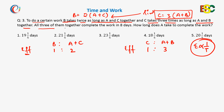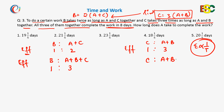The question also says all three of them together complete the work in eight days. From these two ratios, we can find the efficiency ratio of B to A plus B plus C, which becomes 1 is to 3, and the efficiency ratio of C to A plus B plus C becomes 1 is to 4.